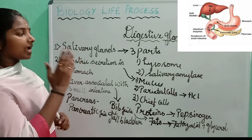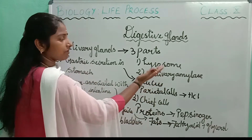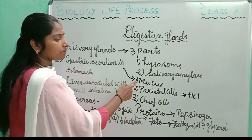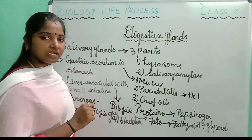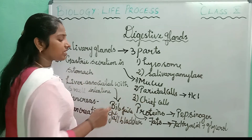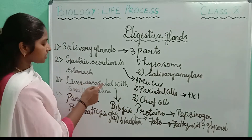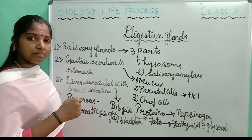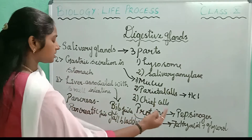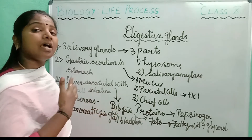So to summarize the glands: first, salivary glands act mainly on carbohydrate substances — salivary amylase converts complex sugars into simple sugars, and lysozyme kills bacteria. In the stomach, three components work: mucus forms a lining layer, parietal cells secrete hydrochloric acid which kills bacteria and aids digestion, and chief cells convert proteins into pepsinogen. Liver, associated with the small intestine, secretes bile juice from the gallbladder for emulsification of fats into fatty acids and glycerol. Pancreatic juice from the pancreas converts the acidic medium to alkaline medium.